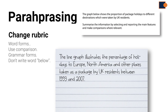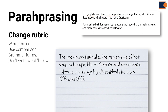You can also change words using synonyms. Words like 'graph,' 'shows,' 'proportion,' and 'destinations' are replaced with alternatives such as 'line graph,' 'illustrates,' 'percentage,' and 'places.' Grammar forms can also be changed. So in this sample, the rubric statement 'package holidays which were taken' is changed into 'holidays taken as a package.' Finally, don't write the word 'below,' which does not make sense, since there won't be any graph below your written essay.